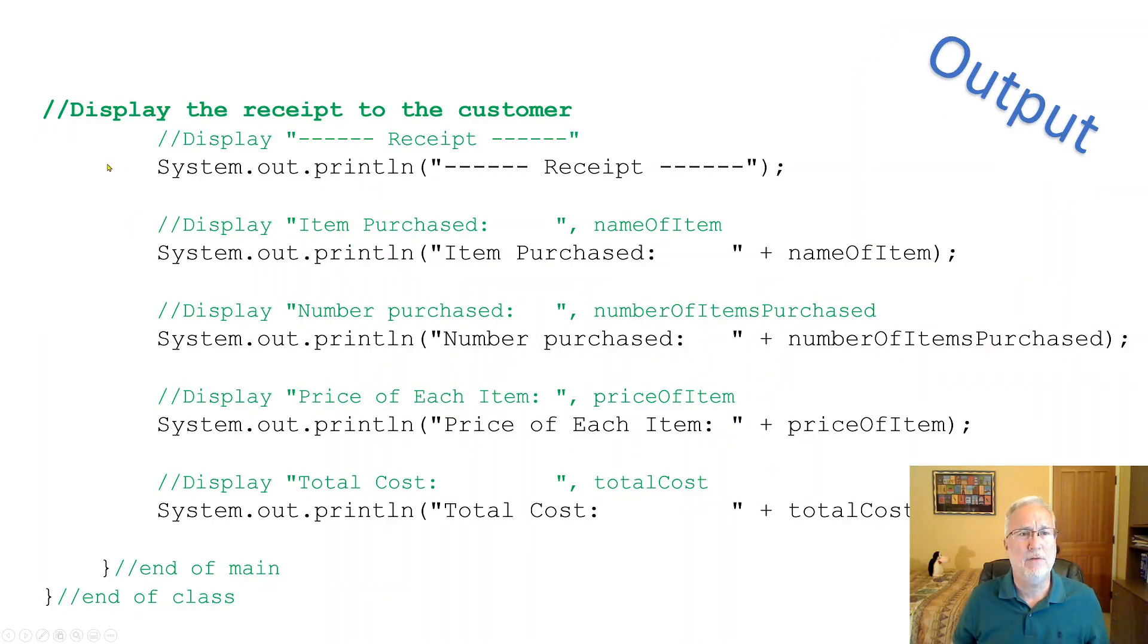So here we have displaying the receipt. System.out.println receipt. System.out.println items purchased plus the name of item, et cetera. So we've got four things we're printing. And that's the program. I hope you see that as pretty simple.